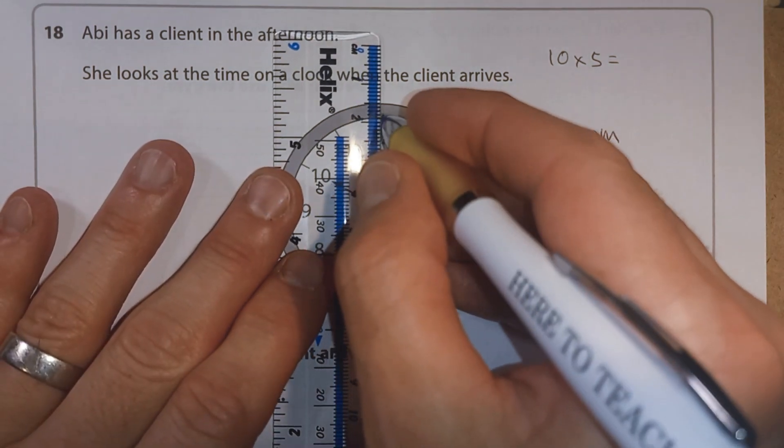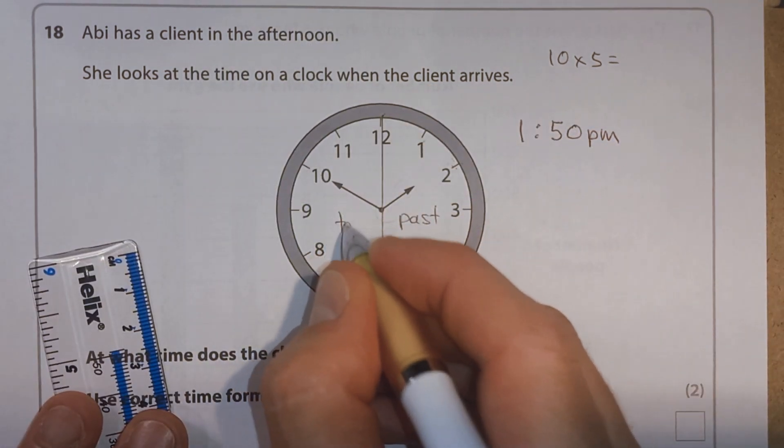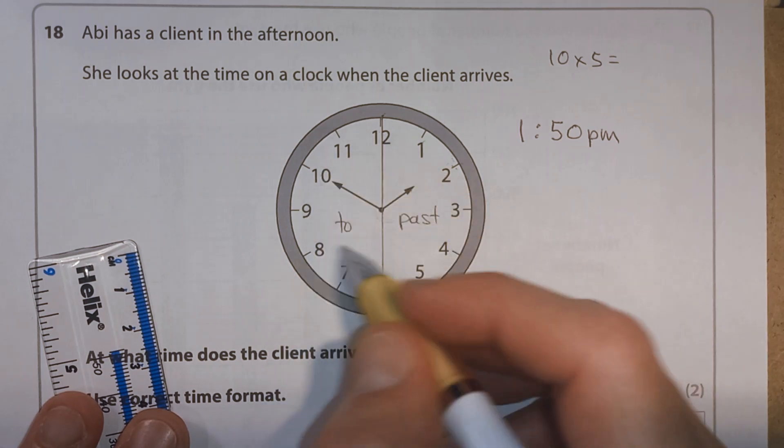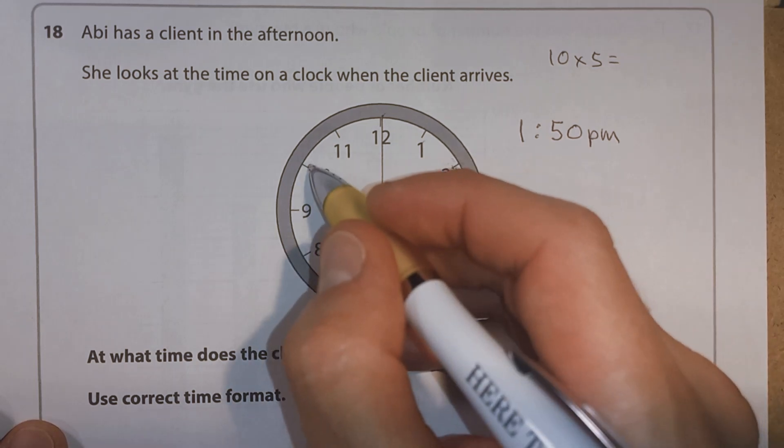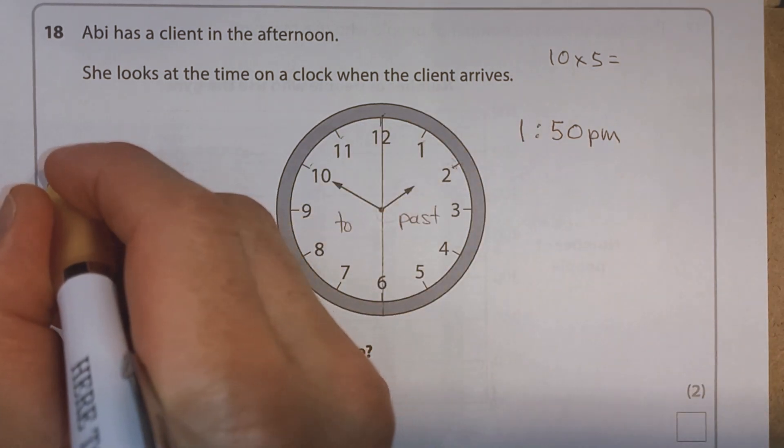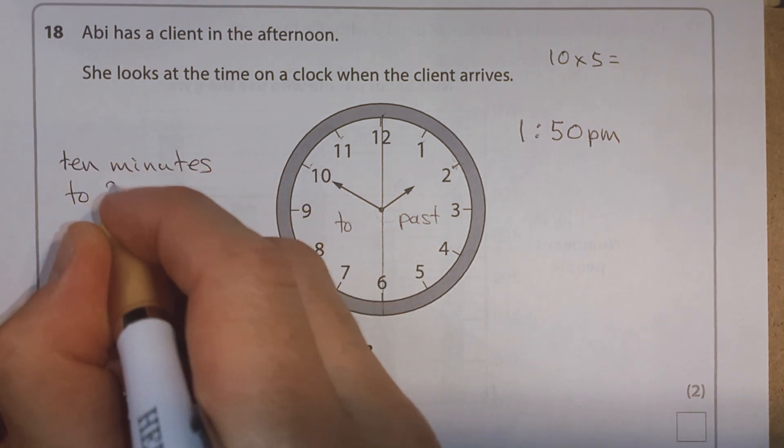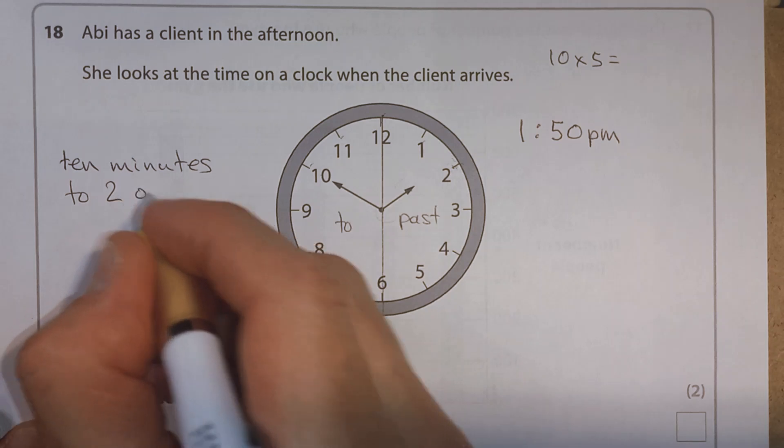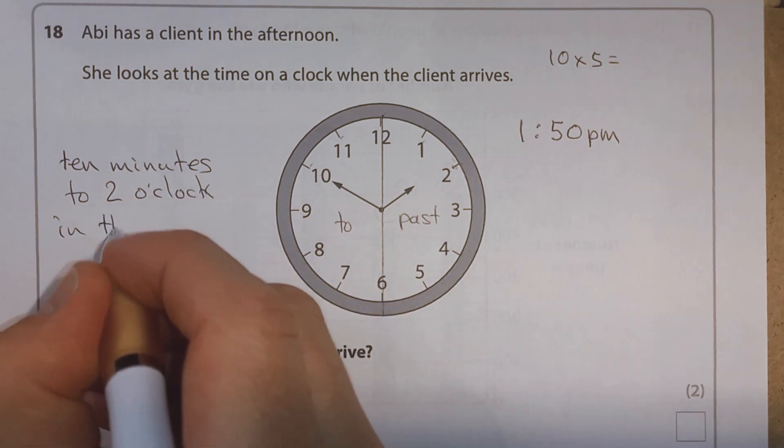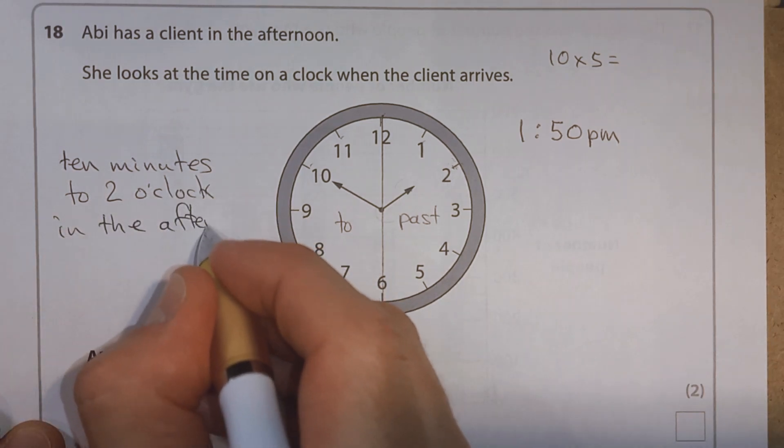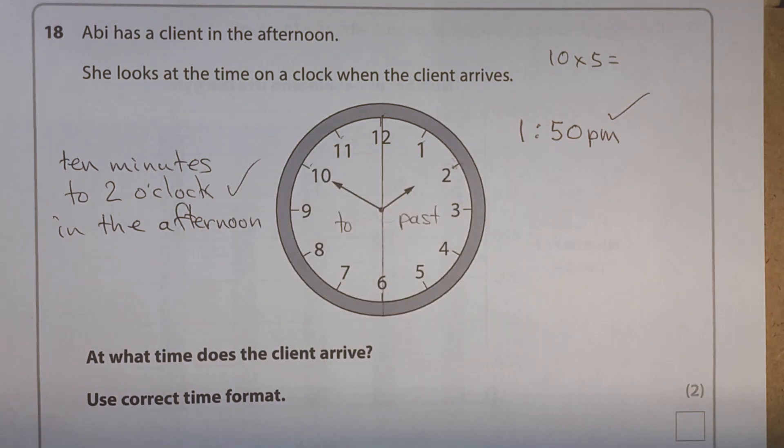Alternatively, you could split the face in half and say this is the past and this is to. And it's on the to side. Well, the next hour would be 2. Well, how many minutes to 2 is it? Well, it's 5, 10. So we can say 10 minutes to 2. Well, we can say 2 o'clock or 10 minutes to 2 o'clock in the afternoon. So that would be right. That would also be right. Either one's fine.